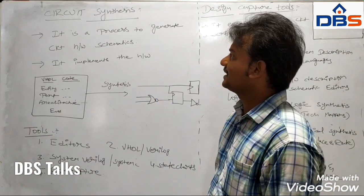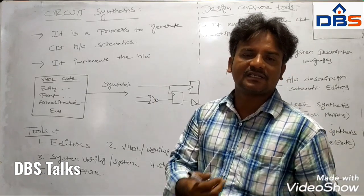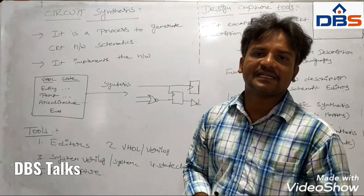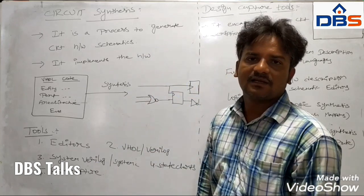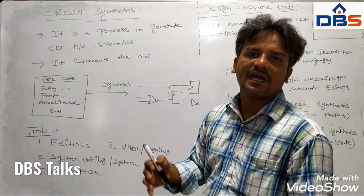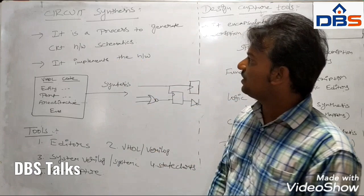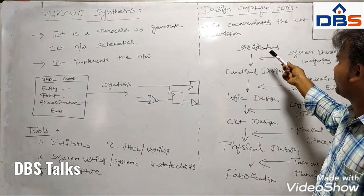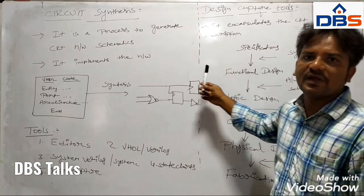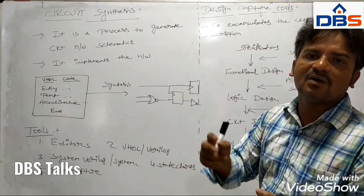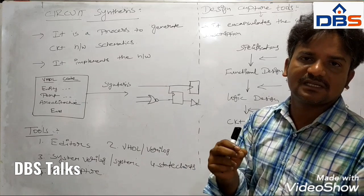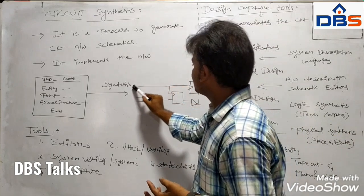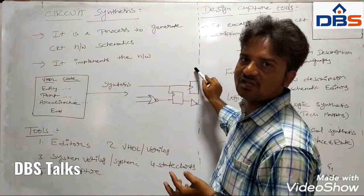The next topic is circuit synthesis. Circuit synthesis converts the given inputs into a gate level netlist or gate level circuit. The gate level description is converted into a physical structure. It is the process of generating circuit hardware schematics. Whenever we give a Boolean expression as input, we define a proper procedure and process with a perfect functionality, and synthesis converts that into a specific logic circuit.